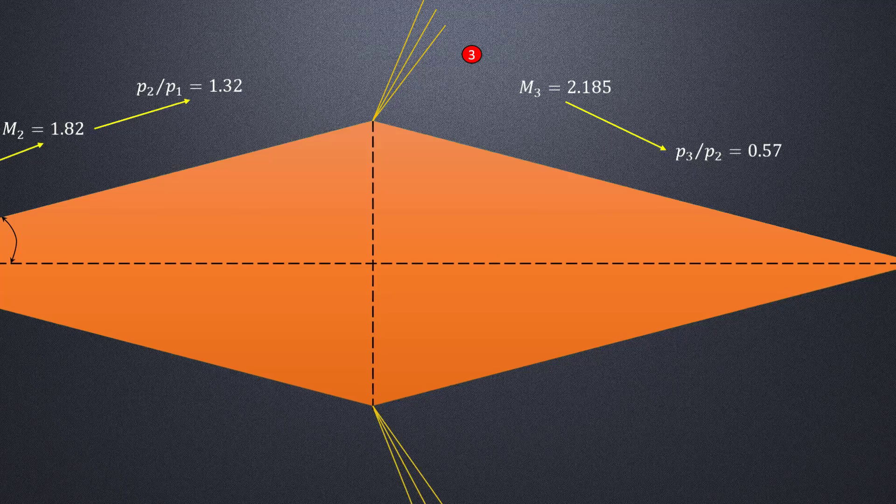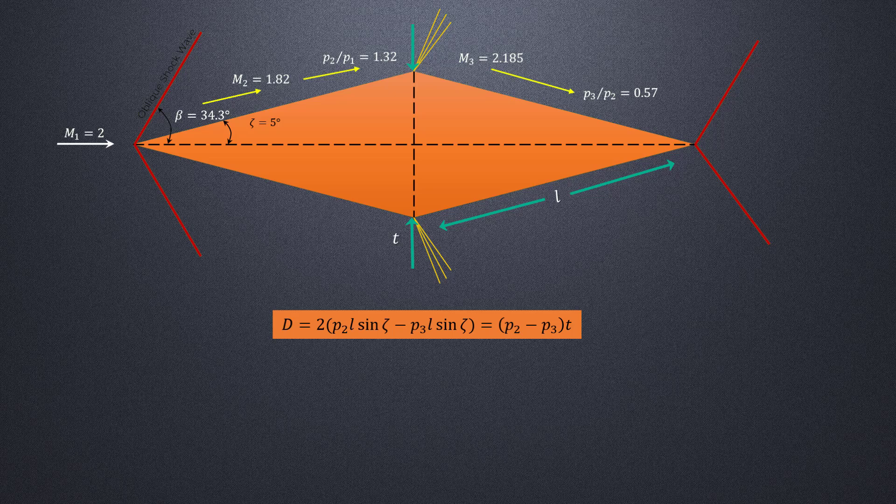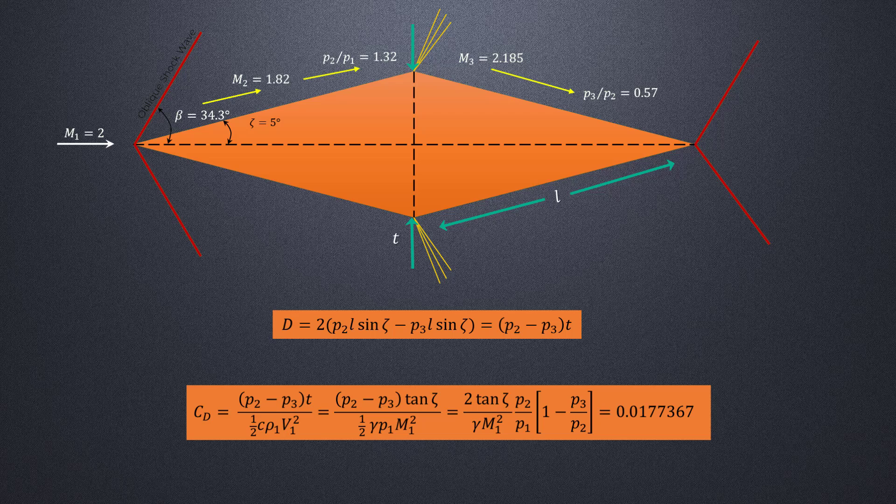We already defined drag as shown here and the drag coefficient can be calculated using the following relationship. Plugging in the appropriate numbers, we obtain a drag coefficient of 0.0177. The lift force is 0 because there is no net force acting in the flow normal direction.